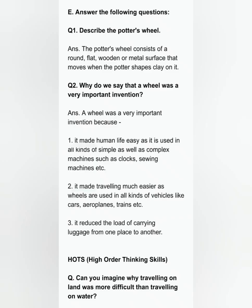Question E: Answer the following questions. Question 1: Describe the potter's wheel. The potter's wheel consists of a round, flat, wooden or metal surface that moves when the potter shapes clay on it. Question 2: Why do we say that a wheel was a very important invention? A wheel was a very important invention because it made human life easy as it is used in all kinds of simple as well as complex machines such as clocks and sewing machines. It made travelling much easier as wheels are used in all kinds of vehicles like cars, airplanes and trains. It also reduced the load of carrying luggage from one place to another.